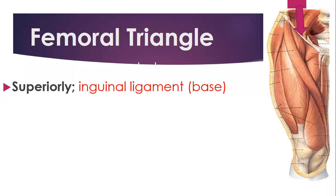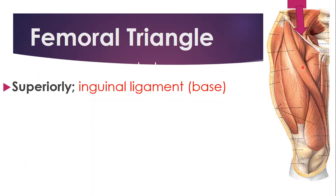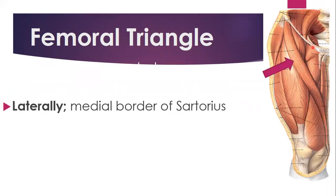The superior border of this triangle is formed by the inguinal ligament — this is the inguinal ligament here, it forms the superior border. The lateral border is formed by the sartorius, the sartorius muscle, which is the longest muscle on the human body.